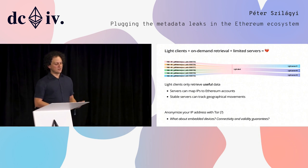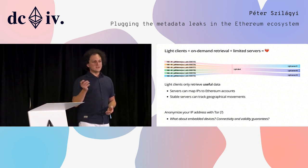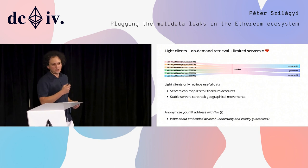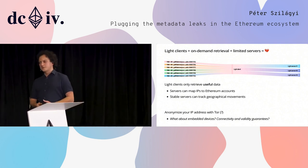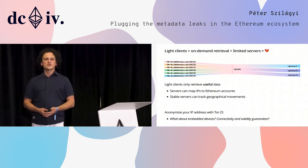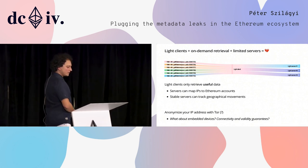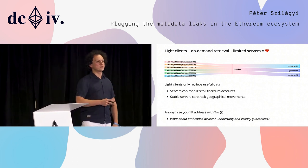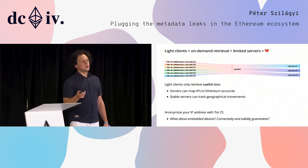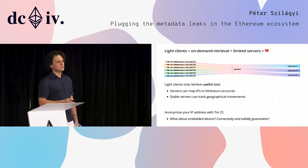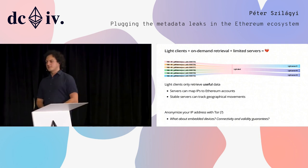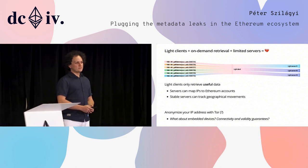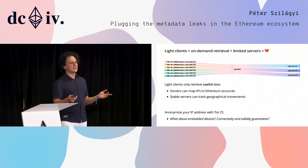Essentially with light clients and on-demand retrieval, the issue is that whenever Mist is connected and a new block arrives, it keeps requesting the same balance for the same account over and over again. Light servers will be able to statistically map out that this particular IP address is interested in one particular address. That gets us back to the exact same issue we had with the discovery protocol — only now we don't have a world map of moving node IDs; we have a world map of moving Ethereum addresses. And similarly to the discovery protocol, this can be done publicly by everyone. It's a bit more expensive because you need to run a light server, so at least you're helping the network.